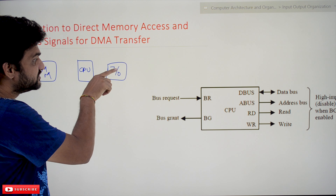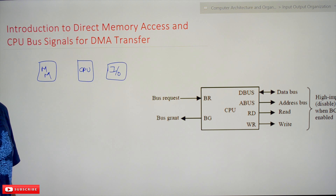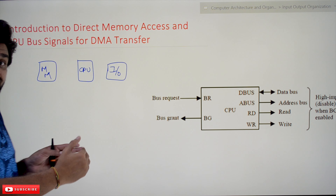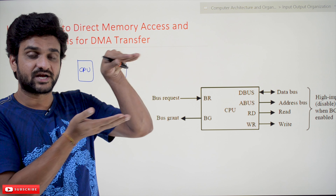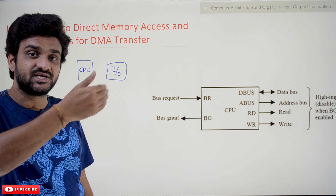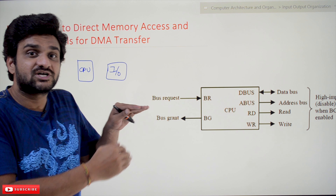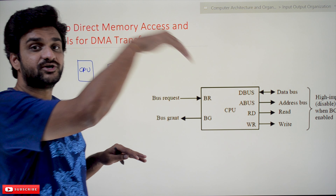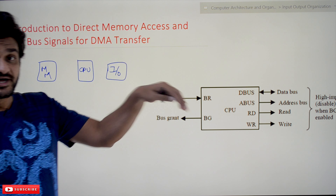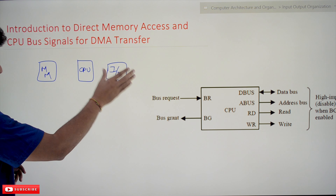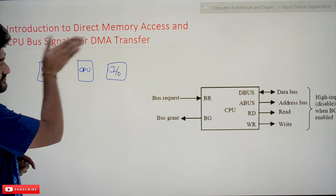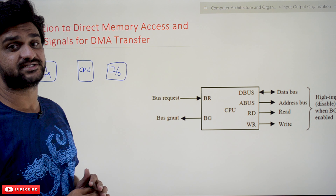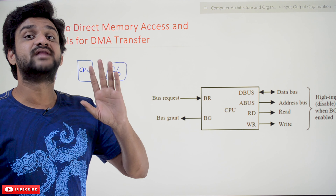Similarly, in interrupt-initiated I/O, whenever the I/O device is ready for transfer, it interrupts the program execution of the CPU. The CPU will go into the interrupt cycle. After completion of execution of the current instruction, the CPU will identify whether an interrupt has occurred. If there is an interrupt, it shifts into the interrupt cycle. So in both cases, the transfer between I/O device and memory is done through the CPU.